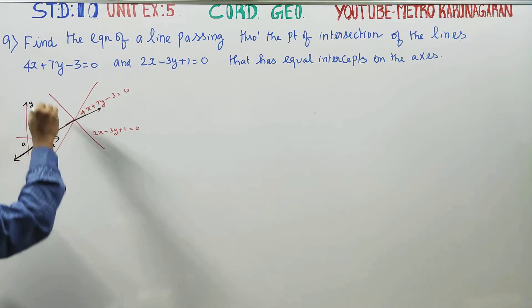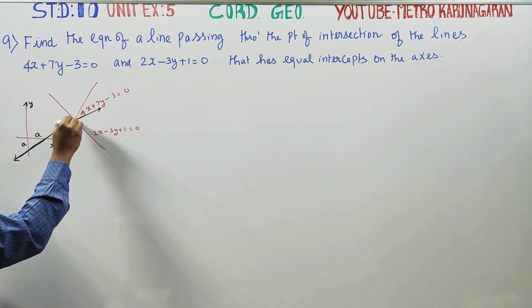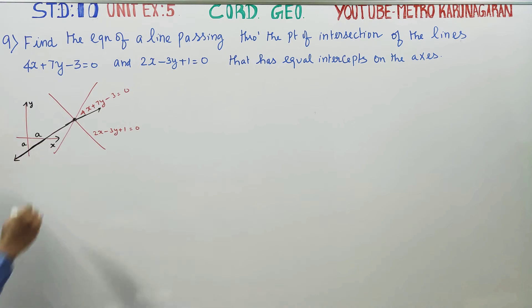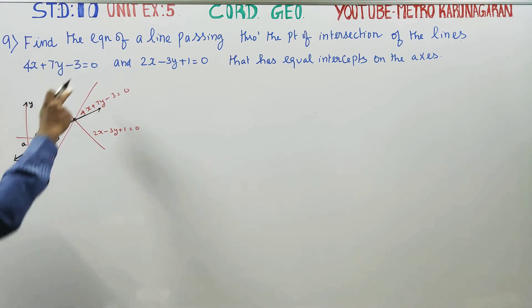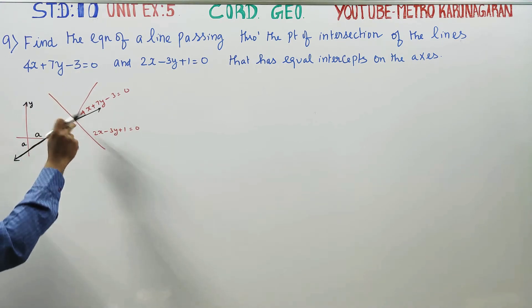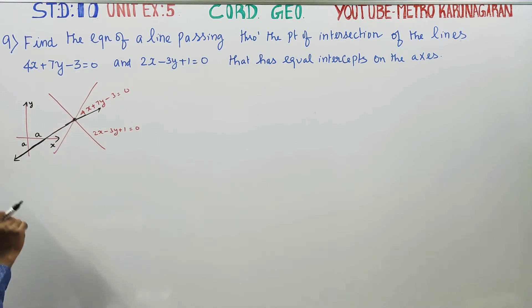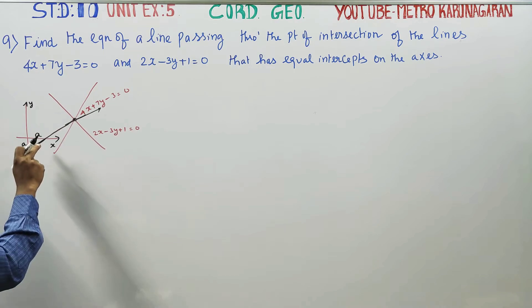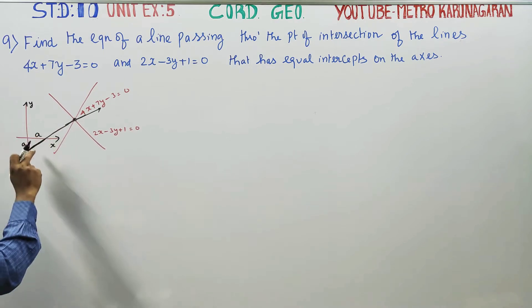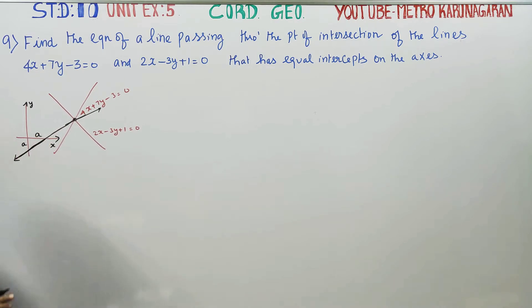There are two pieces of information in this problem. First: find the point of intersection of the two lines. Second: the x-intercept and y-intercept of the required line are equal.